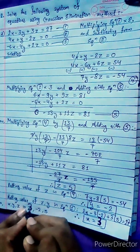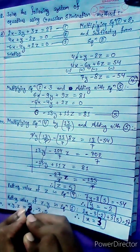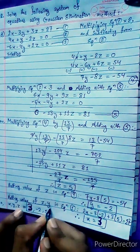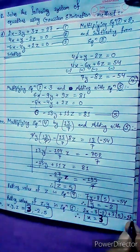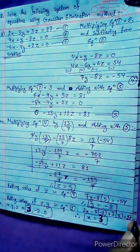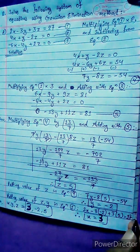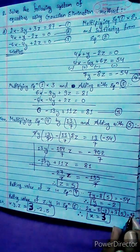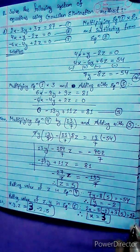Sometimes we should refresh our mind before doing questions. So our final answer is x equals 3, y equals minus 2, z equals 5. Now the next question.